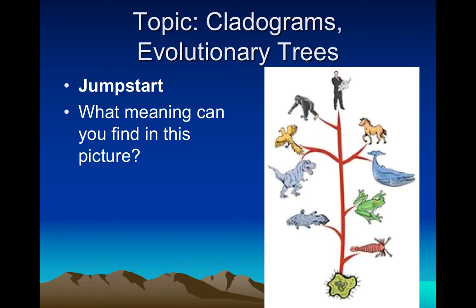Hello class, today we're going to talk about cladograms, otherwise known as evolutionary trees. I have a very simple version of an evolutionary tree pictured here. In the past I'd asked my students what meaning they can derive from this — sometimes they say that man is better than everything else because he's higher up, but there's no reason why we couldn't have drawn this the other way, so this doesn't really represent up or down.